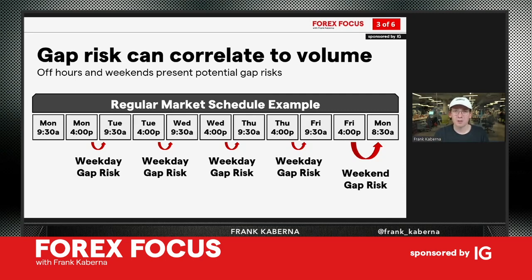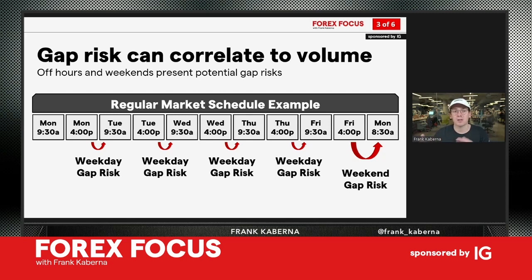Gap risk can also correlate to volume — liquidity is a big piece of this. Even if futures, forex, or crypto are open, there are periods of lower liquidity. Between roughly 4 p.m. Eastern and 8 p.m. Eastern, no major market is fully active: the U.S. is closed, Europe has closed, and Japan is just getting ready to open. So even when markets are technically open, lighter volume and lower liquidity during those hours can still pose gap risk.